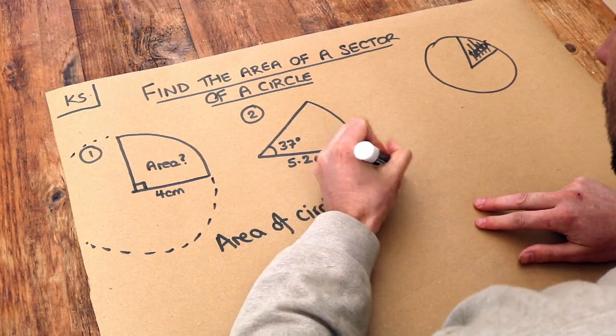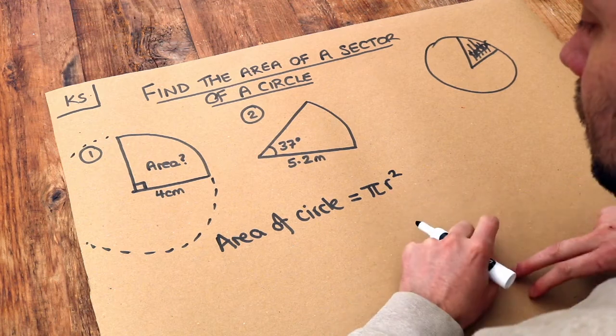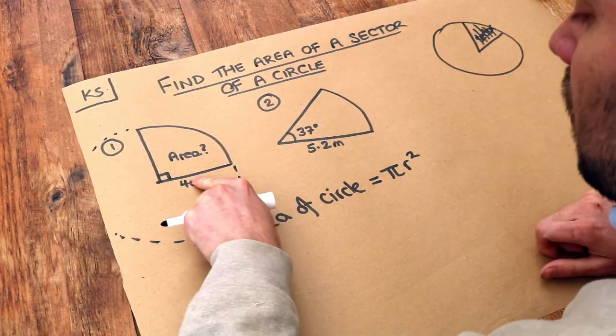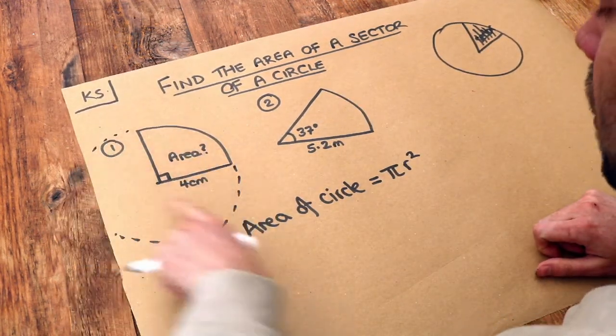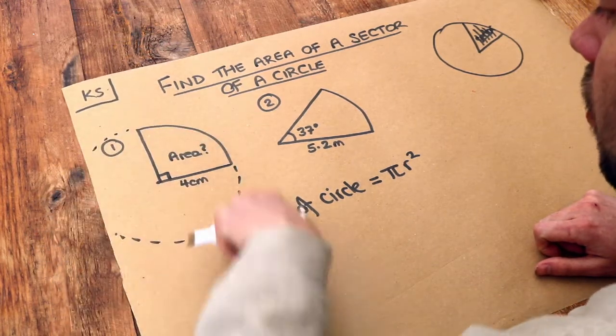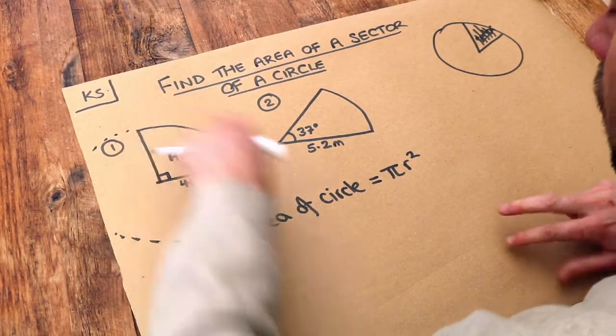times r squared. So it's π times the radius r squared. And then we want to find a suitable fraction of that area, because we're going to find the area of the whole circle and then just find a particular fraction of that.